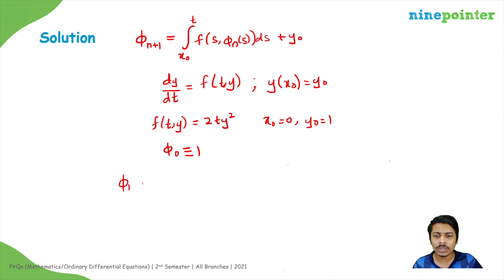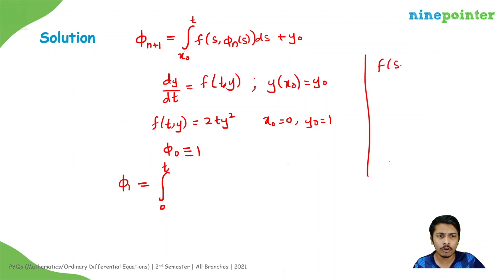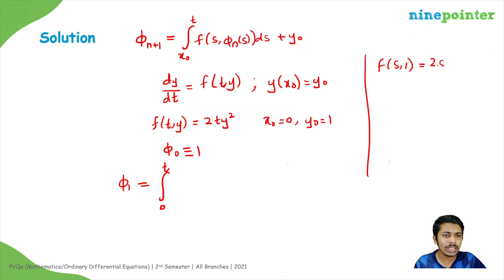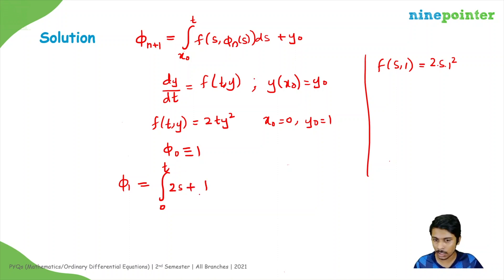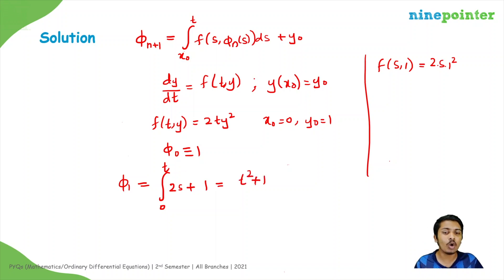From the zeroth Picard iterate we find φ₁, which is the integral from 0 to t of f(s, φ₀(s)) ds plus y₀. Since φ₀ is the constant function 1, we substitute f(s, 1) = 2s·1² = 2s. Integrating from 0 to t gives s² evaluated at the limits, which is simply t², plus the constant y₀ = 1. So φ₁ = 1 + t².